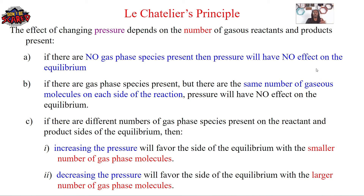To summarize: no gas species — no effect. Same number of gas molecules on both sides — no effect. If you increase the pressure, it favors the side with the smaller number of gas molecules, because your volume is getting smaller. If you decrease the pressure, your volume is getting bigger, so it favors the side with the larger number of gas phase molecules.